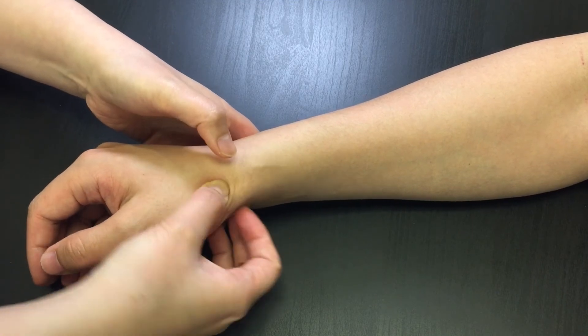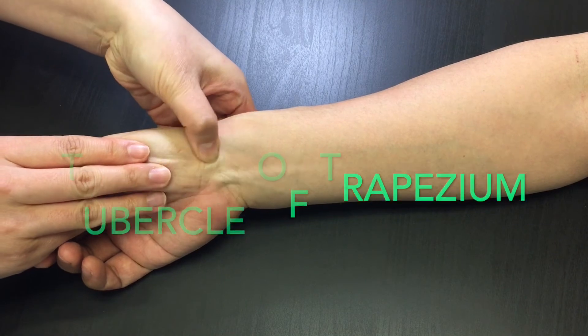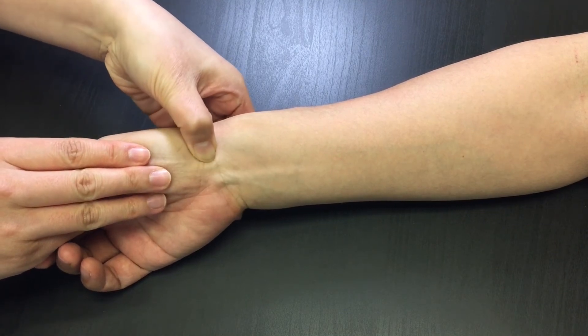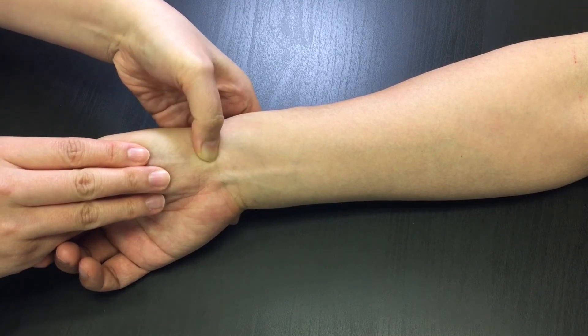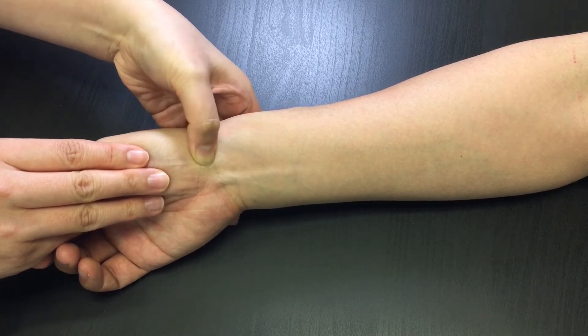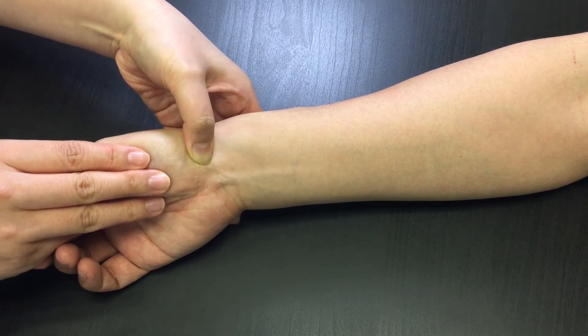The tubercle of trapezium can be located on the anterior aspect of it. Once you locate the trapezium, slide onto the palmar side of it to feel for the tubercle. Often, the tubercle of trapezium is so close to the tubercle of scaphoid that it makes it hard to distinguish them individually.